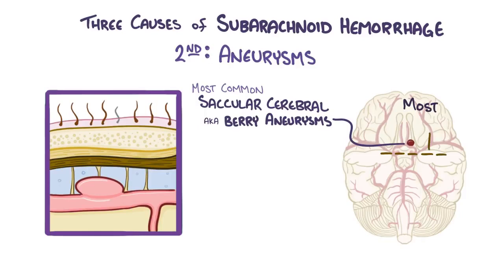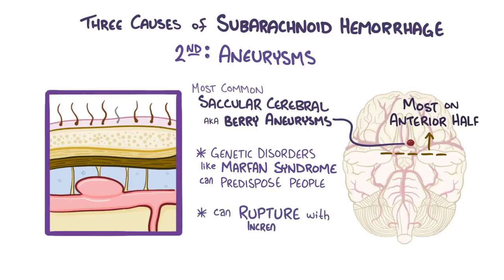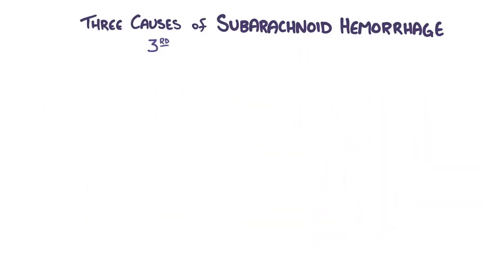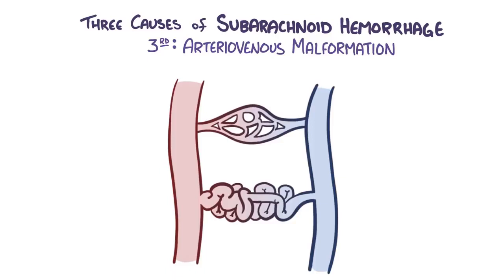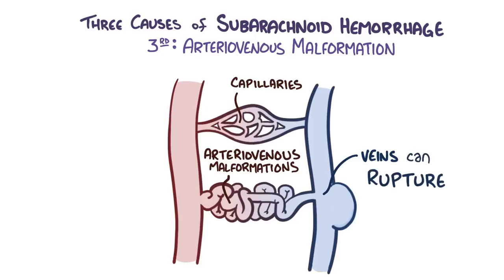Most saccular cerebral aneurysms arise in the anterior half of the Circle of Willis, whereas only a few arise in the posterior half. Some genetic disorders like Marfan syndrome can cause a defect in the connective tissues of arteries and can also predispose individuals to having saccular aneurysms. Aneurysms can burst open when there's an increase in intracranial pressure, like what you might feel when moving a large sofa. The third cause of a subarachnoid hemorrhage is an arteriovenous malformation. Normally, arteries and veins are connected by small leaky blood vessels called capillaries, but in arteriovenous malformations they are replaced with abnormally formed tangled blood vessels, characterized by at least one direct connection between the artery and the vein. Over time these abnormal vessels can dilate, and since veins aren't used to dealing with high arterial pressures, they can rupture causing a subarachnoid hemorrhage.